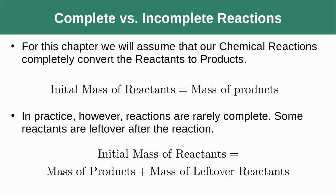For this chapter, we're going to assume that our chemical reactions completely convert to products — that will make our lives a lot easier. In this case, the initial mass of the reactants is going to equal the mass of the products. In practice, though, reactions really don't go all the way to completion; you always wind up with at least some of the reactants left over.